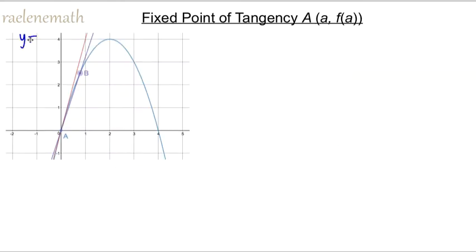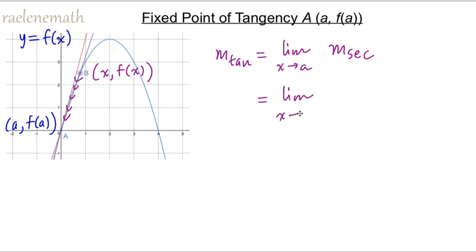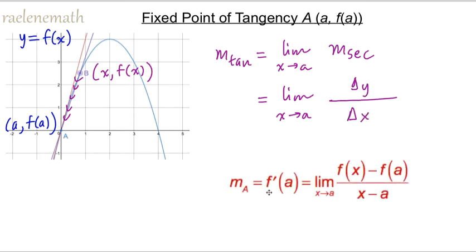Now if we consider a continuous and smooth function y equals f of x and zoom in at the point of tangency A with coordinates (a, f(a)), and we let the second point on the secant line B — labeled (x, f(x)) — move towards point A, then the tangent slope equals the limit as the x-coordinate of the second point approaches the x-coordinate of the first point of the secant slope. Calculating delta y over delta x, we get that the tangent slope f prime of a equals the limit as x approaches a of [f(x) minus f(a)] all over [x minus a].